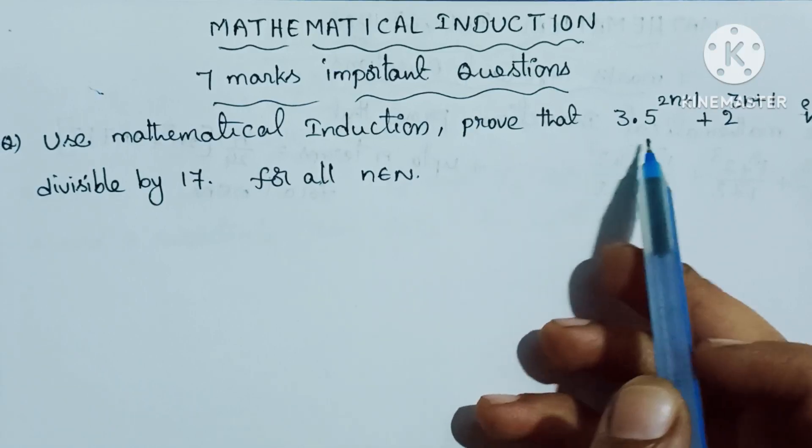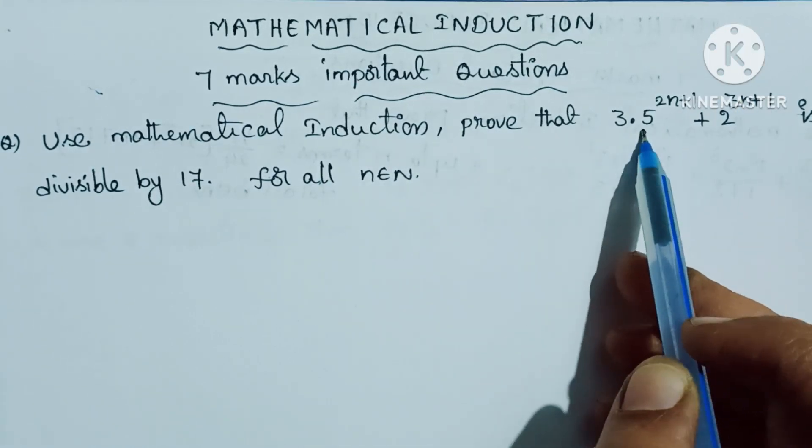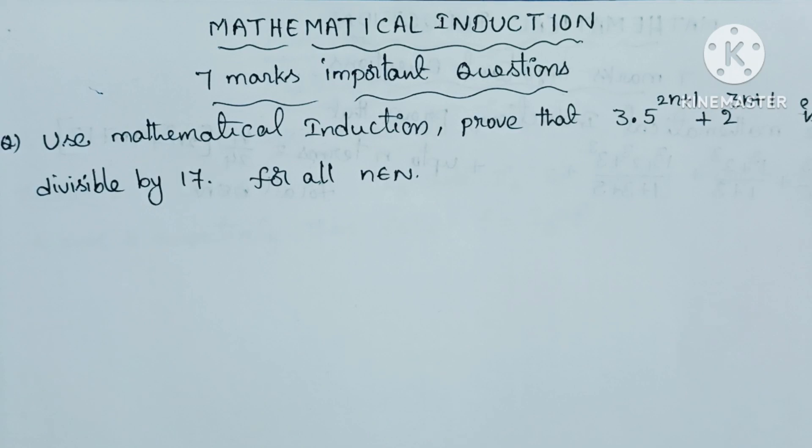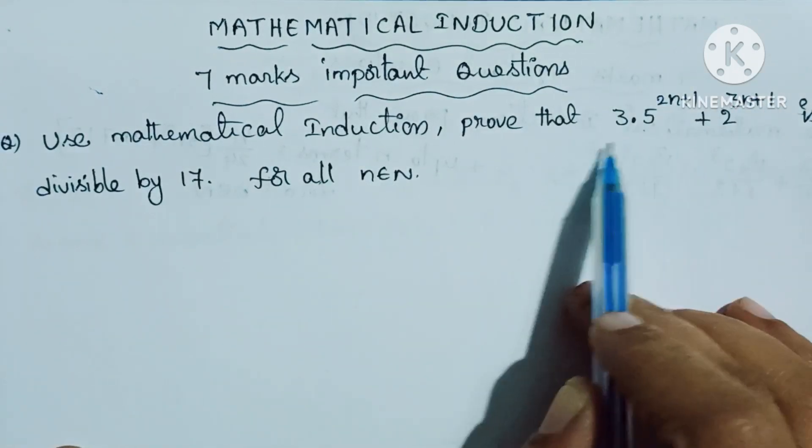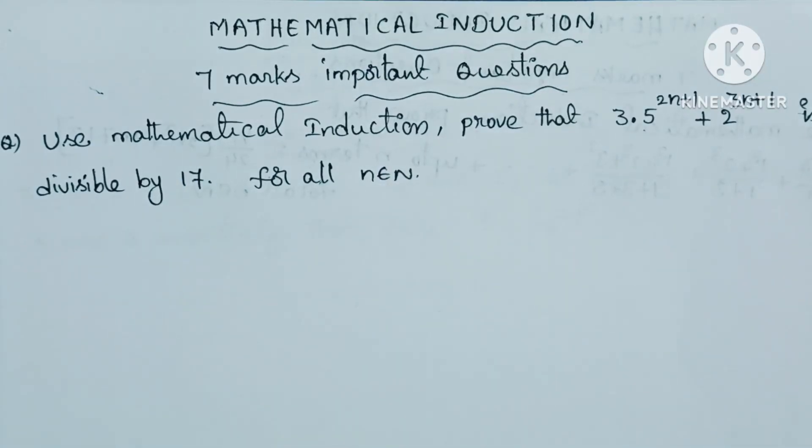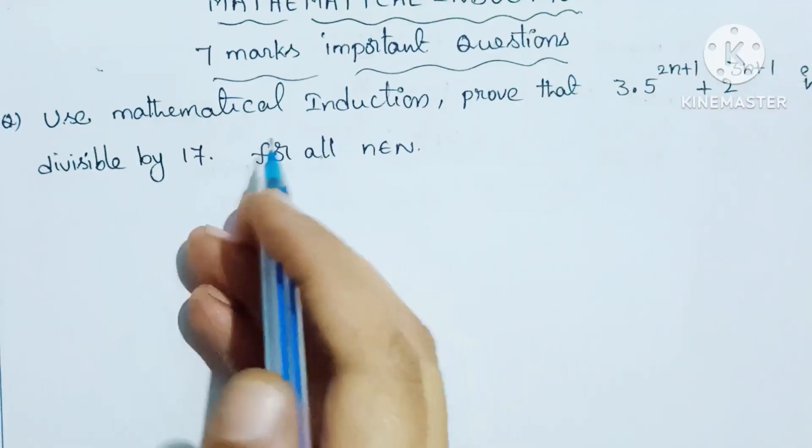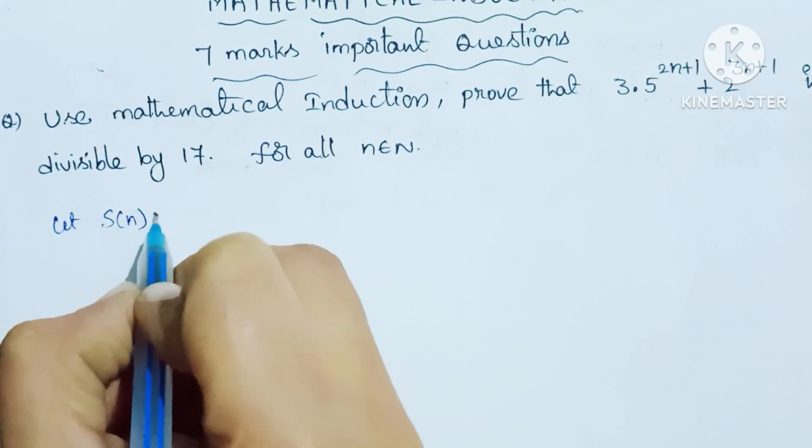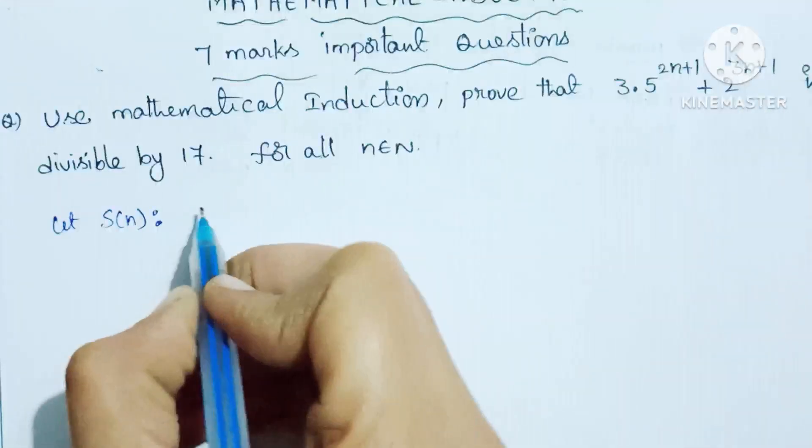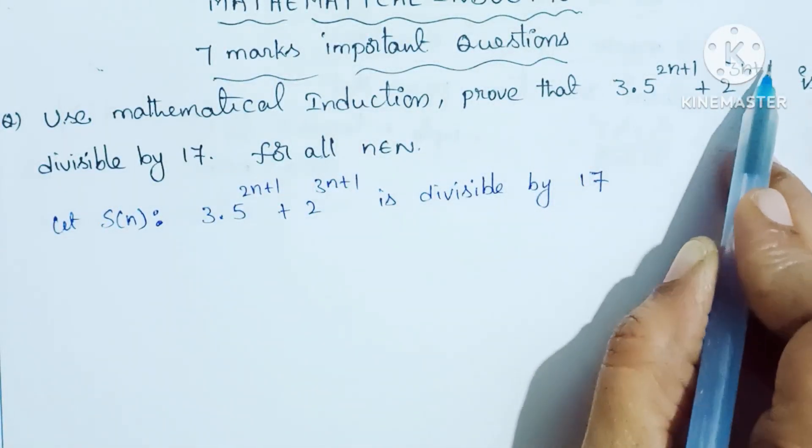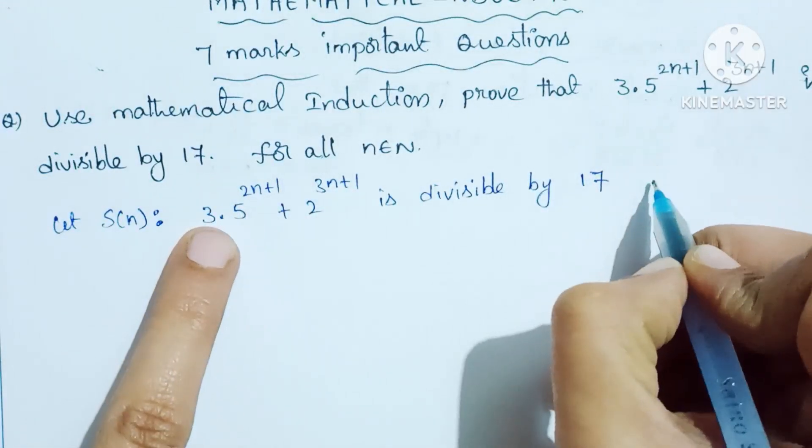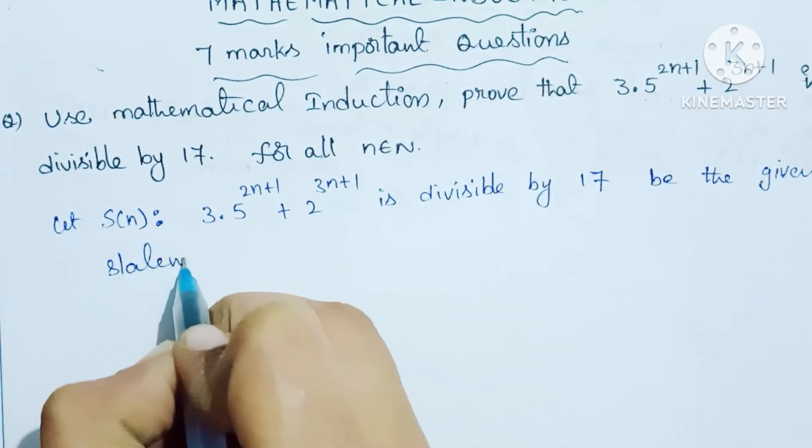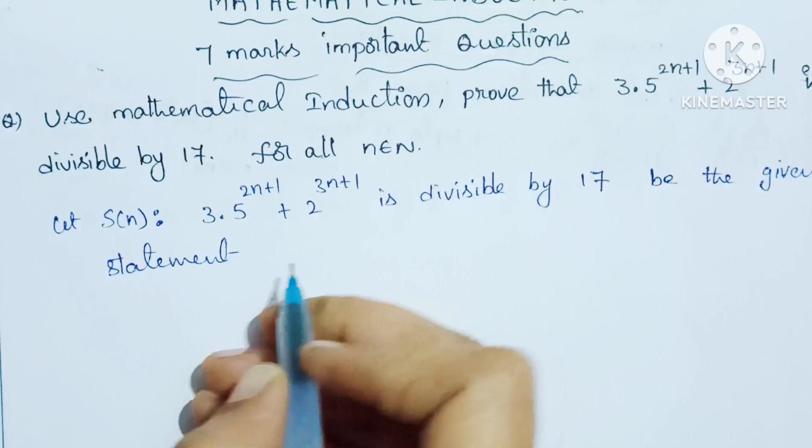Use Mathematical Induction. Prove that the expression 3 into 5 power 2n plus 1 plus 2 power 3n plus 1 is divisible by 17 for all n. Let S(n) be the given statement: 3 into 5 power 2n plus 1 plus 2 power 3n plus 1 is divisible by 17.